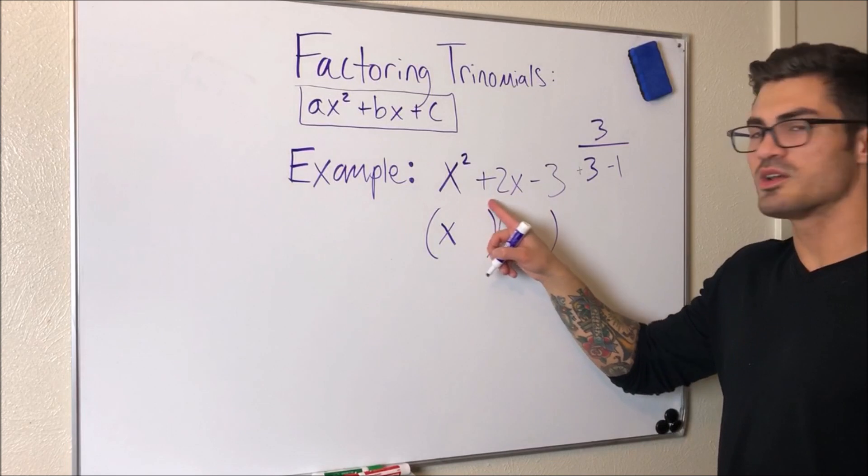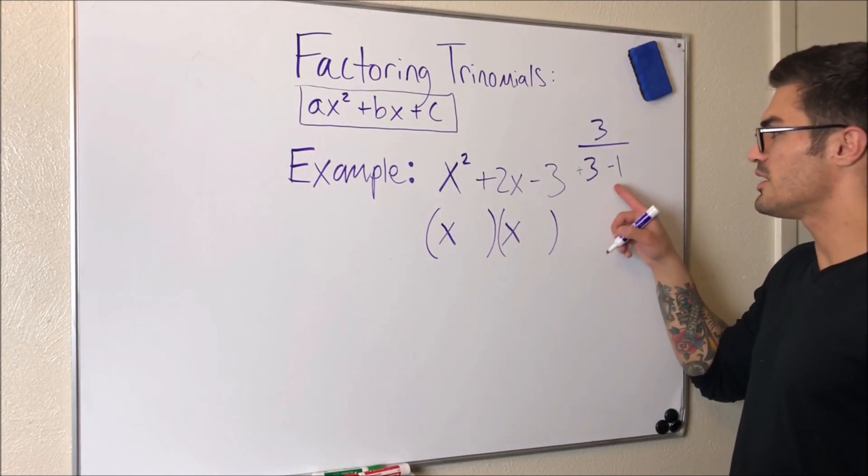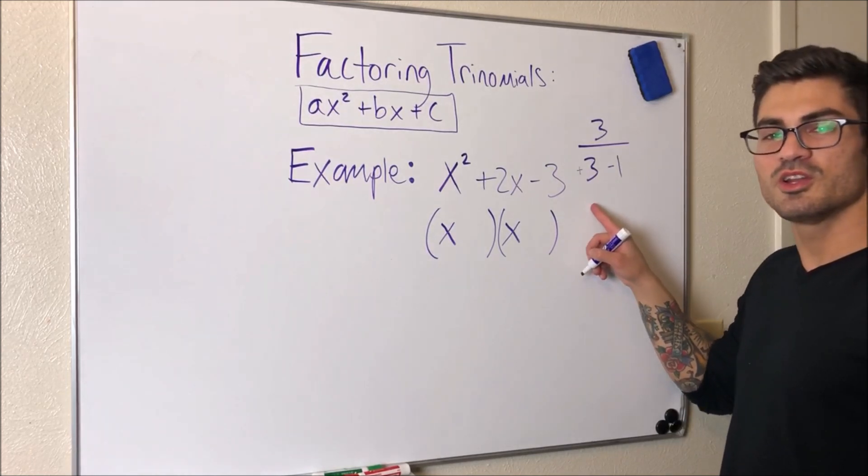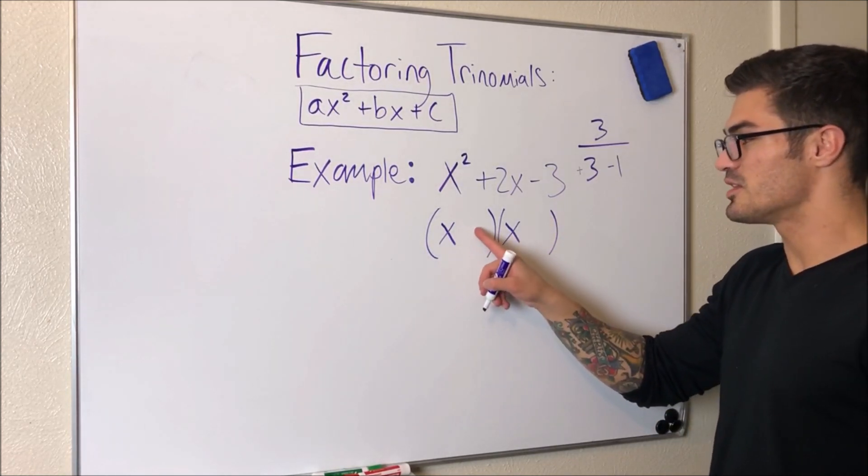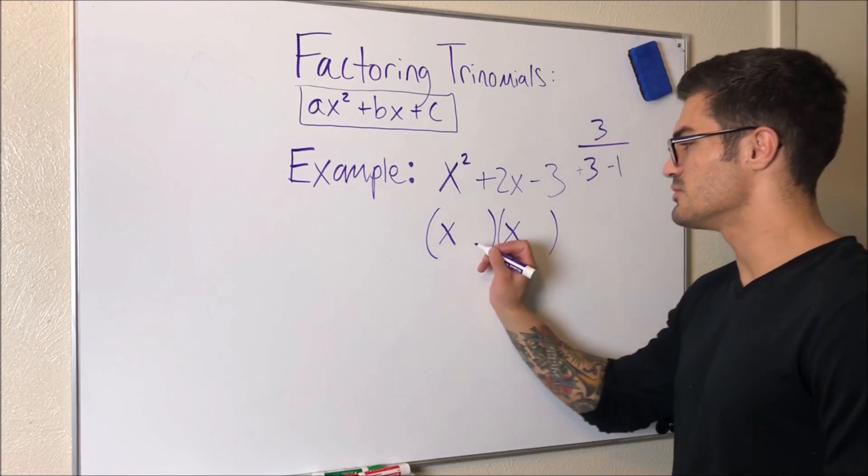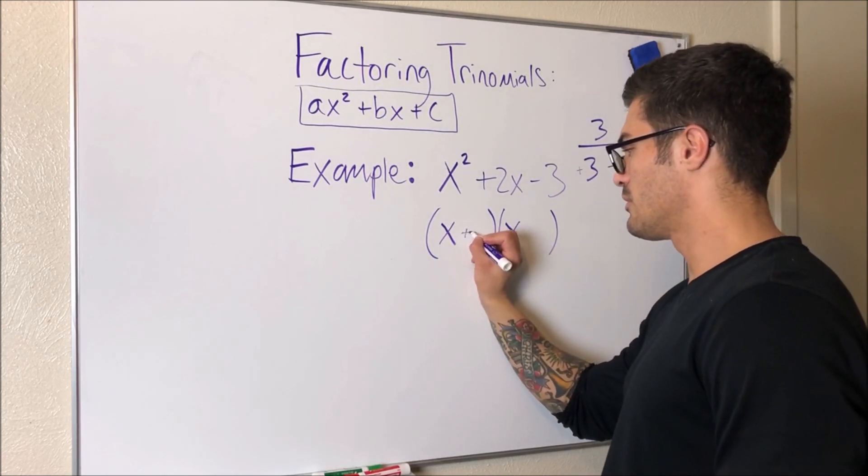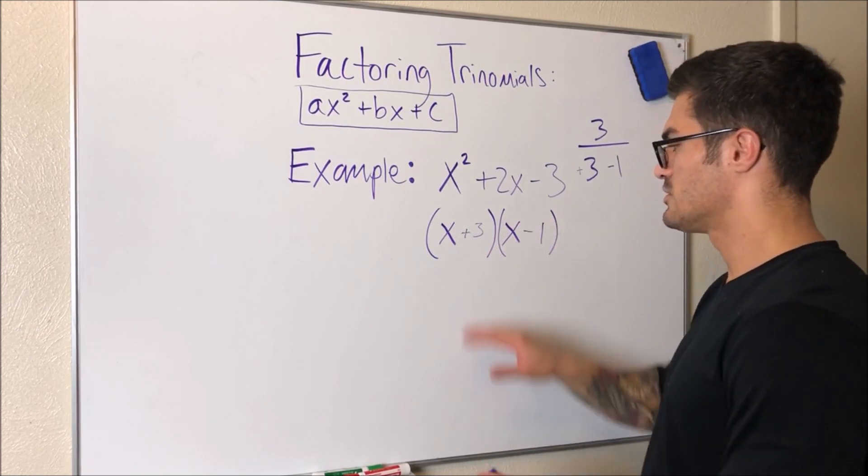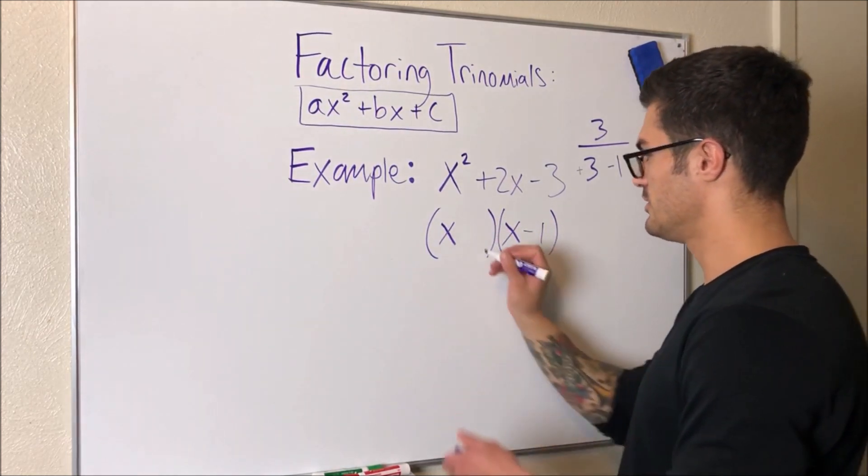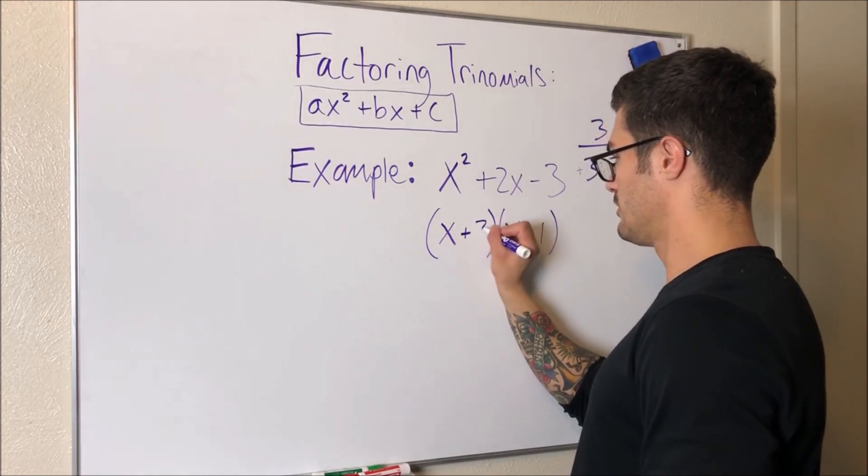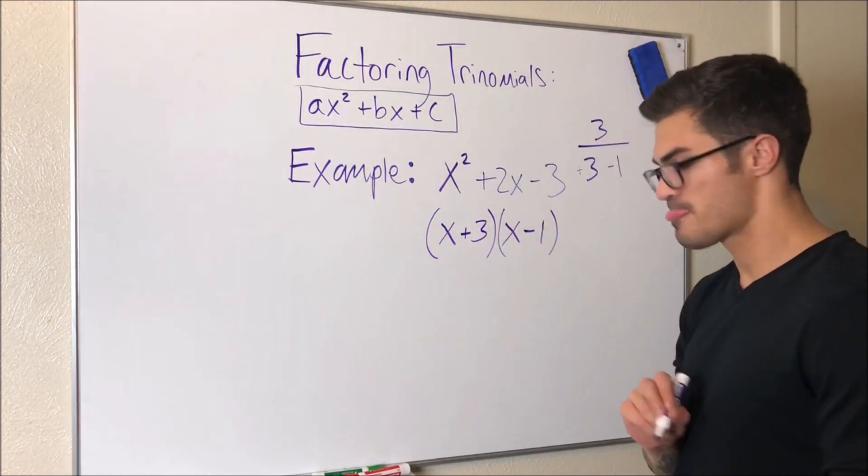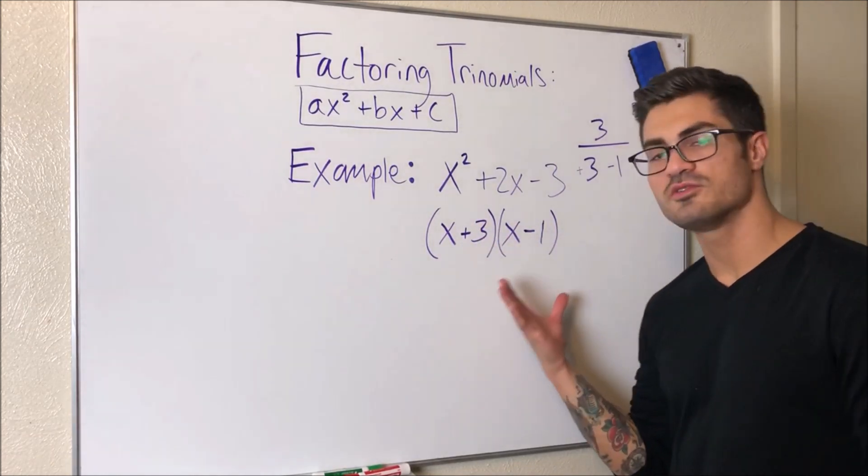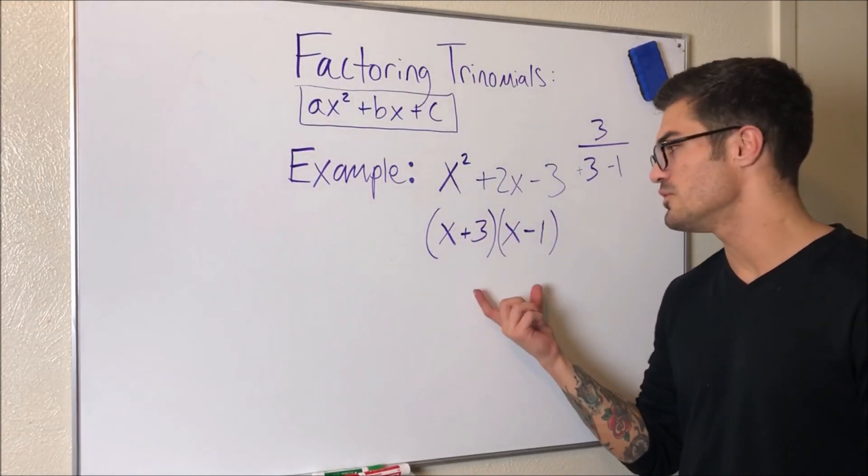So what I'm going to end up having is plus three minus one. That will give me my positive two, and if I multiply them I'll get my negative three. So I'm going to fill in these spots with plus three and minus one. Alright, so I have taken this trinomial and I have rewrote it as a product of two binomials and it is now fully factored.